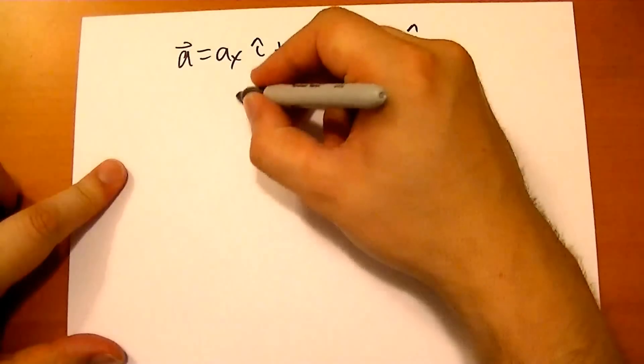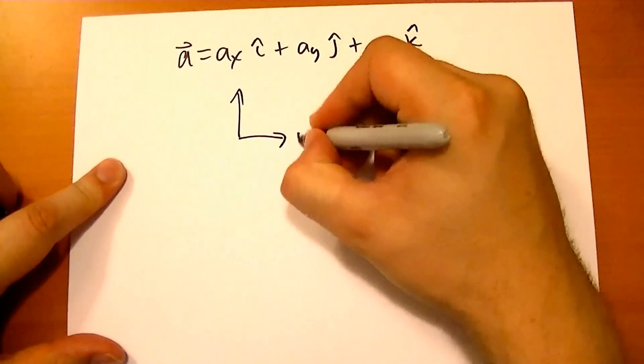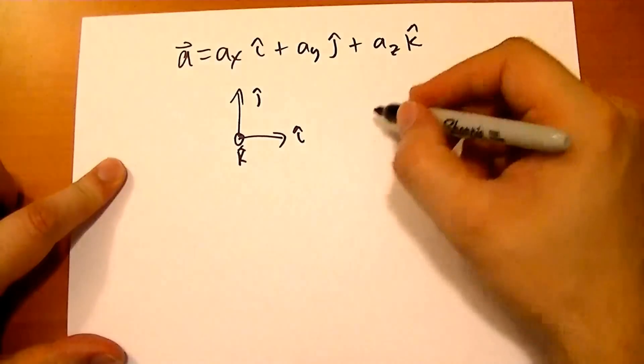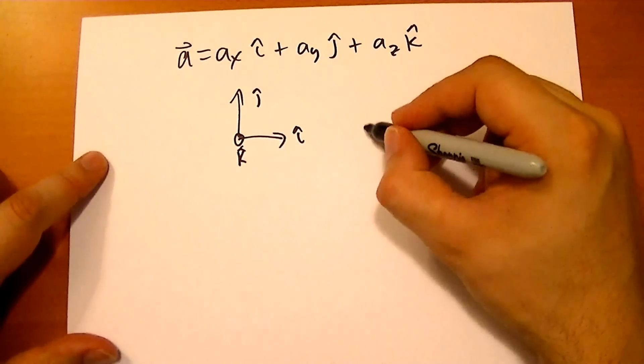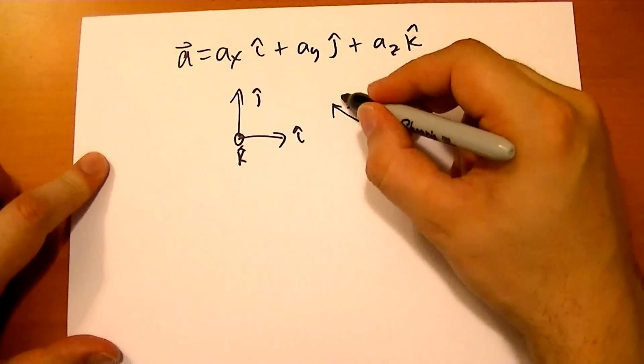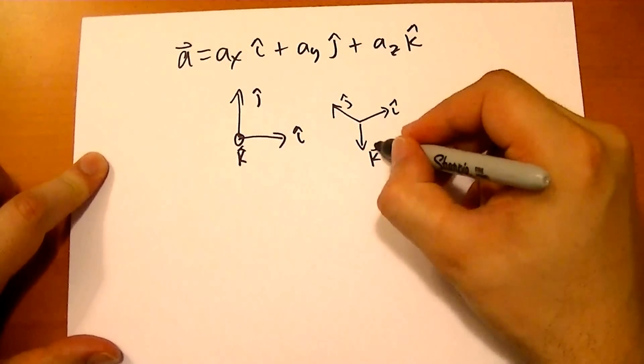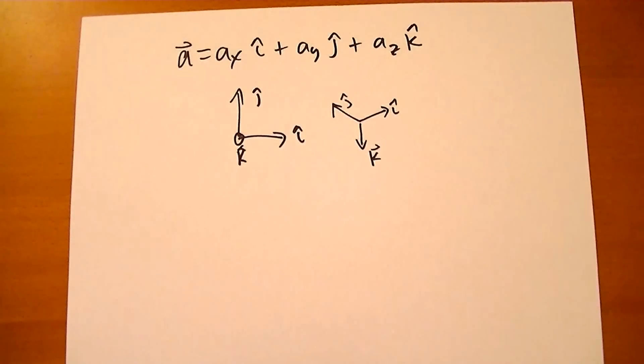So, let's say you have your i-hat, j-hat, and then k-hat coming straight at you. And then you want to rotate that somehow. So now you have, like, let's say your j-hat is pointing that way, i-hat is pointing that way, and i-hat and k-hat are both coming out of the page.